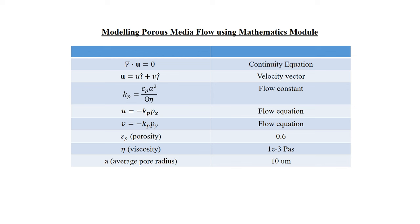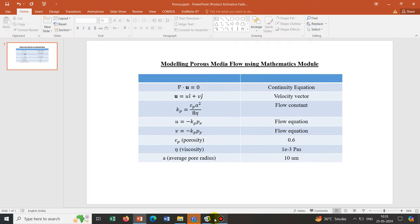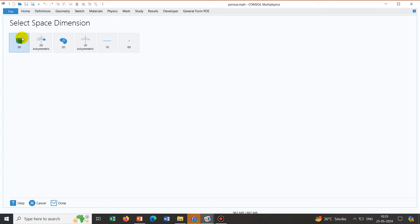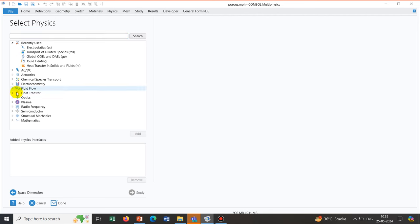For a physical system we can quantify all those parameters and from there calculate the kp value. The pressure gradient will depend on how we apply pressure across this porous media. We are going to model this in COMSOL. We go to Model Wizard, click on 2D since this is a 2D problem, and then proceed with the Mathematics module.